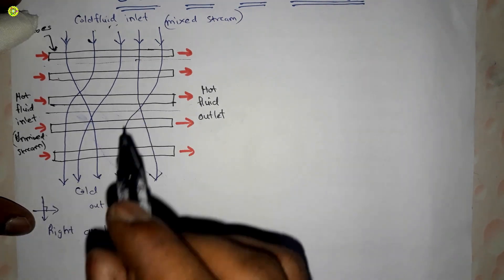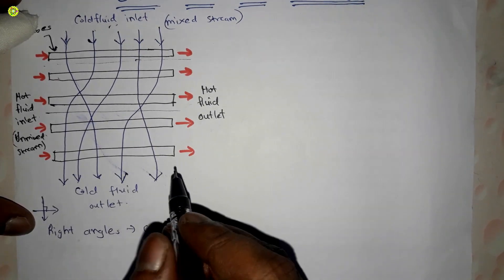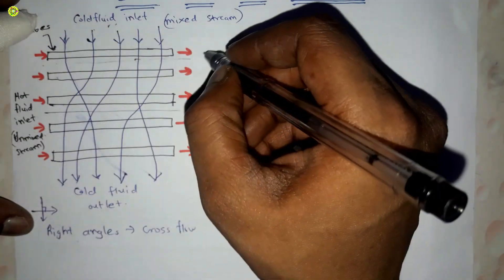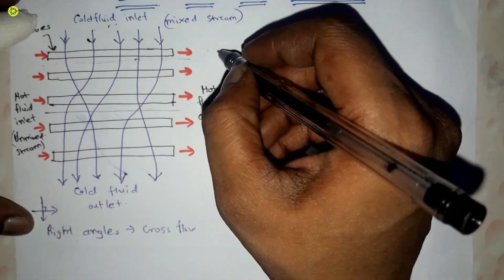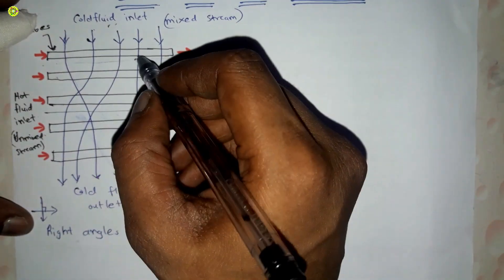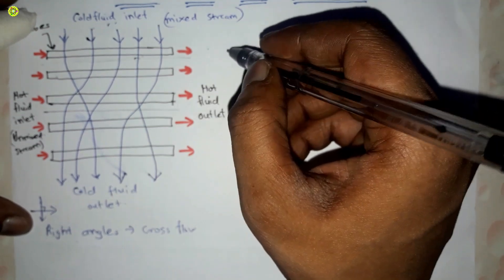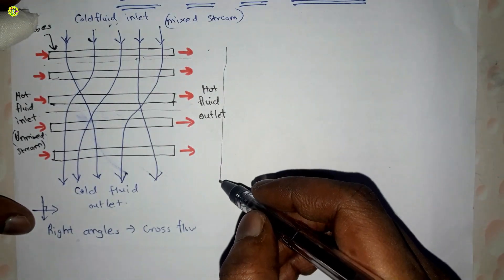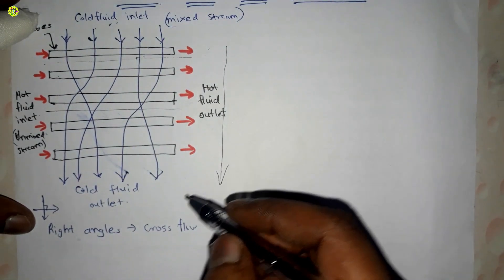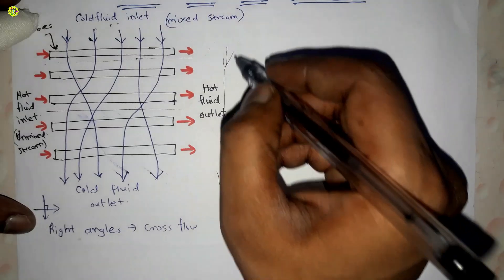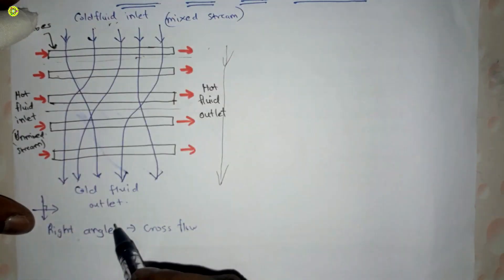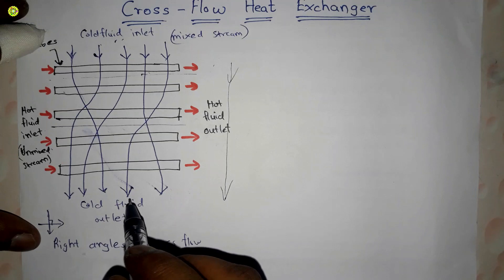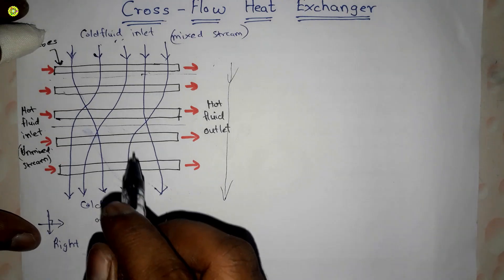The temperature of the cold fluid varies only in the direction of flow — that is, in the vertical downward direction, as you can see in this diagram.